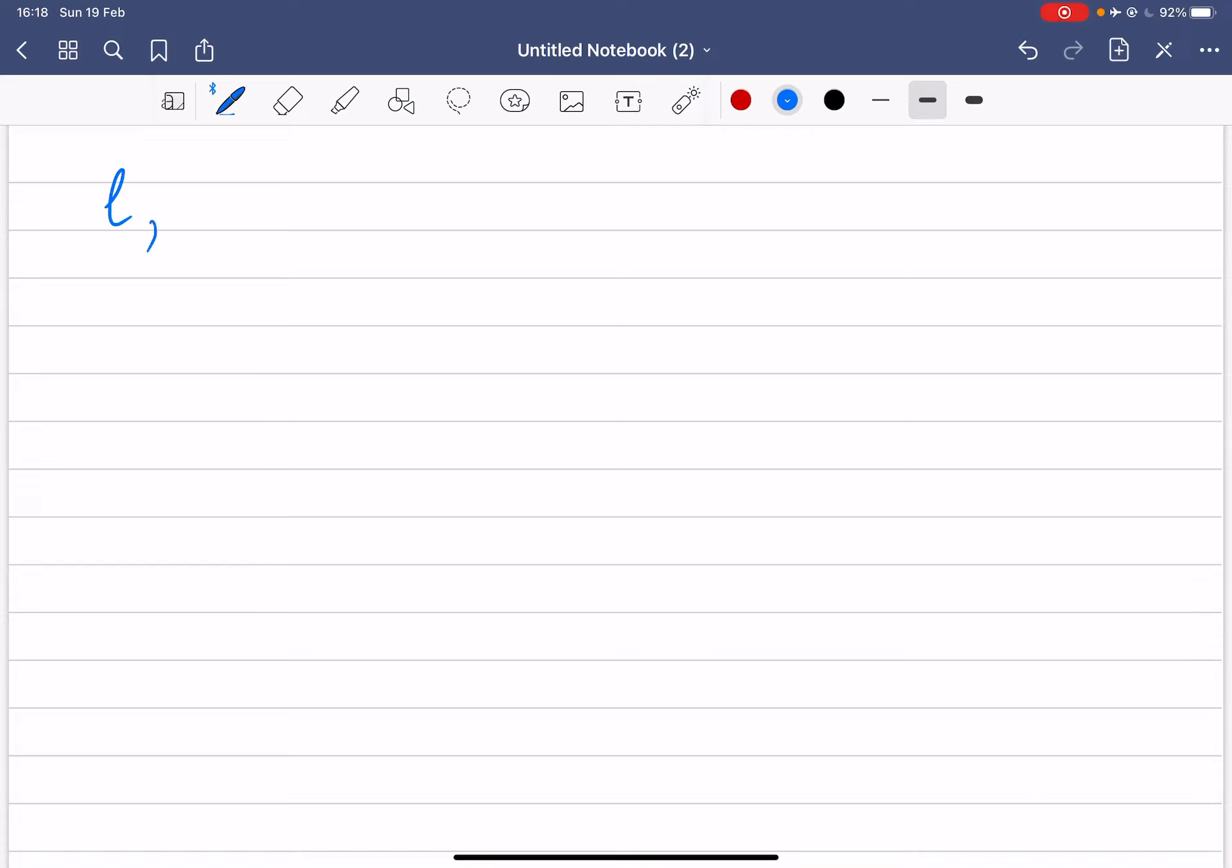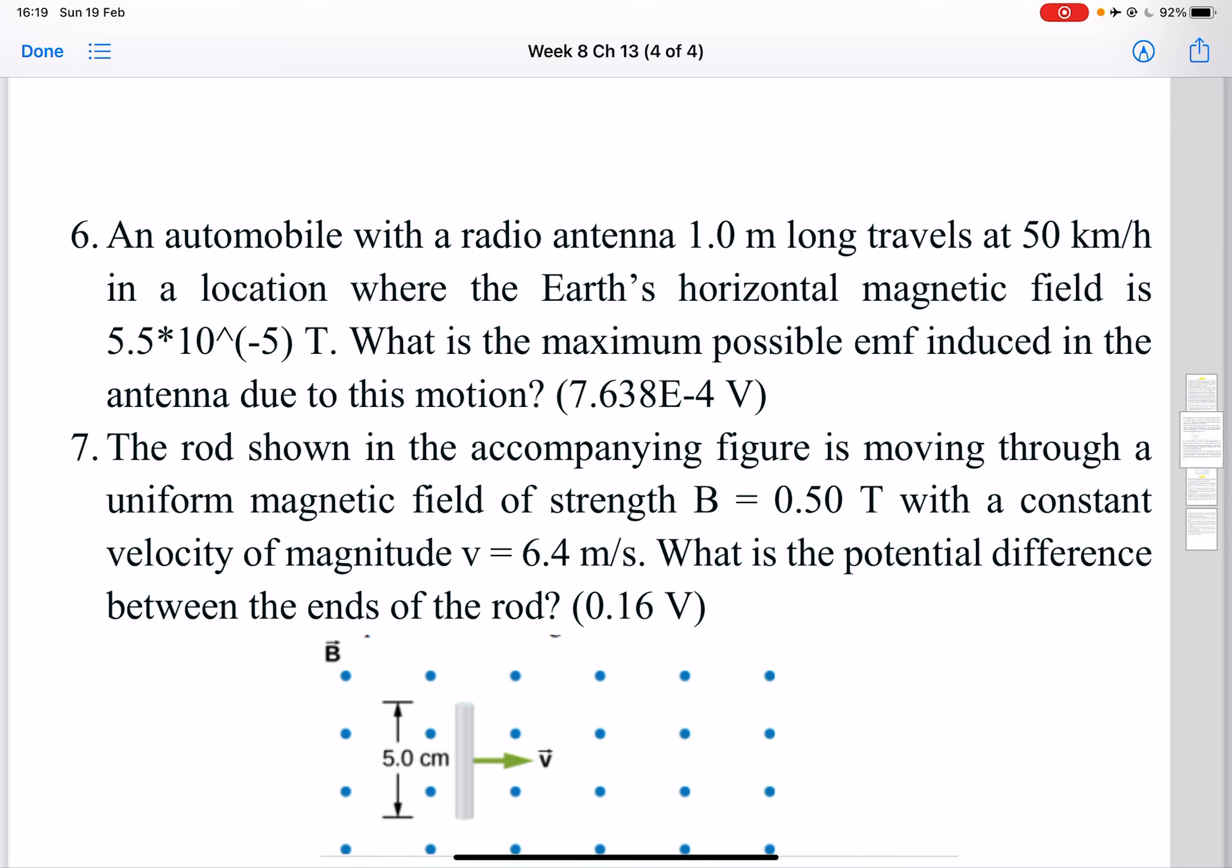Basically, l is given, v is given, and B is given. So the induced emf is simply by formula which is defined by Bvl. Okay, so if you put the numbers you should get the answer. And don't forget that v is given in terms of kilometer per hour, so you have to convert to meter per second.